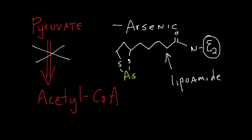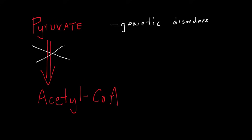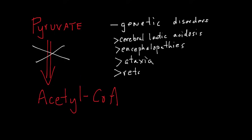There are many genetic diseases associated with deficiencies of enzymes in the PDH complex. The most common are due to inhibition of the first enzyme in the pathway. The main pathologic results of mutations in the PDH enzymes are cerebral lactic acidosis, encephalopathies, ataxia, and retardation. Again, the prevalence of neurologic symptoms is because the brain obtains most all of its energy from the aerobic oxidation of glucose.